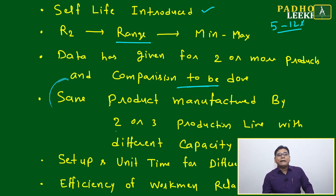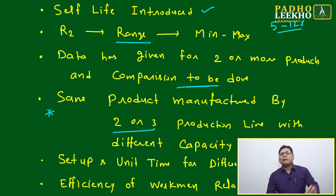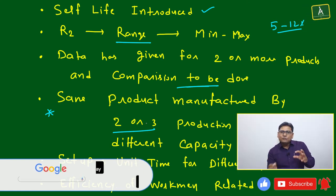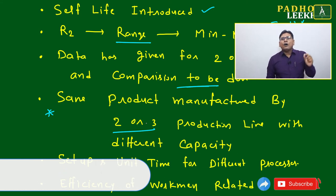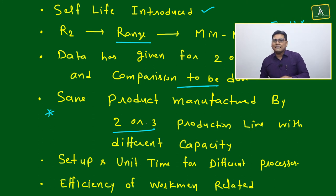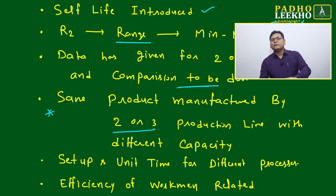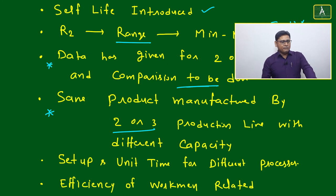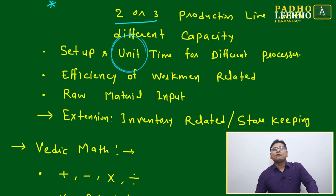Another interesting variation: same product manufactured by two or three production lines. Here, only one production line was added with capacity defined year by year. If product P1 is manufactured across production lines PL1, PL2, PL3, PL4, each with different efficiencies, comparing the data between PL1, PL2, and PL3 creates another good, above-CAT-level question.